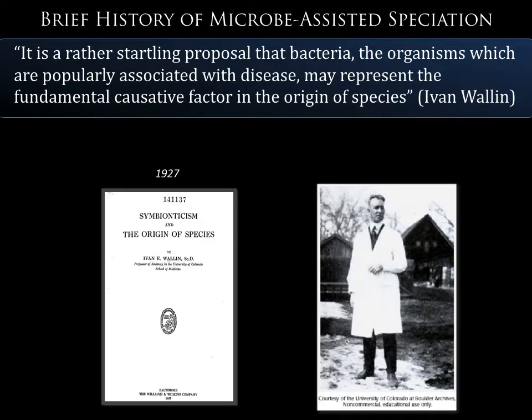It's not until 1927 when somebody steps forward and makes a claim about the role of bacteria in speciation and major evolutionary processes. This fellow is a professor at Colorado named Ivan Wallen, who wrote a not well-known book called Symbionticism and the Origin of Species. He was the first to observe that mitochondria, by dividing by binary fission, are actually bacterial-derived. Lynn Margulis actually credited Ivan Wallen's pioneering work in her development of the endosymbiosis theory.